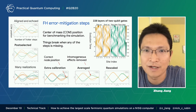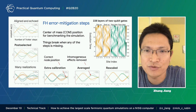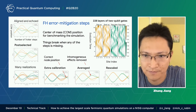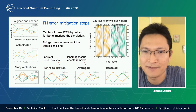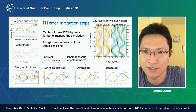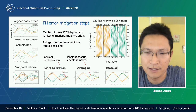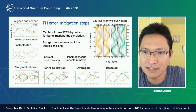Now every trajectory focuses on the correct node, and the error is much smaller. And the next step, we averaged these trajectories, so the trajectory is very predictable and smooth now.